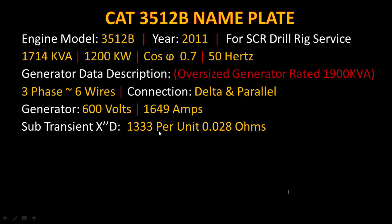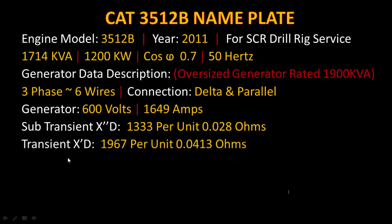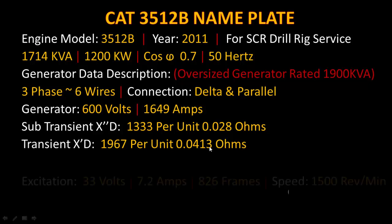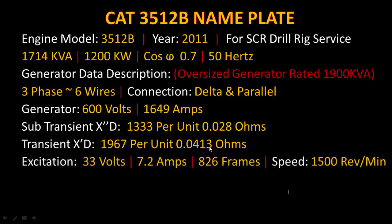Now we see the reactances. The sub-transient reactance is 0.1333 per unit, which equals 0.028 ohms. The transient reactance is 0.1967 per unit, which equals 0.0413 ohms.